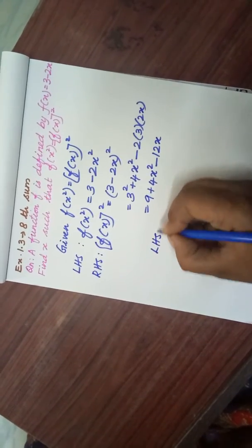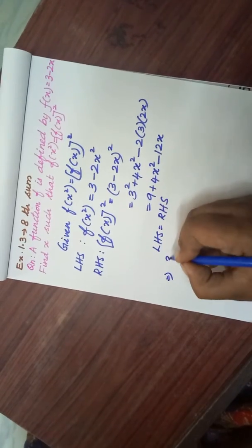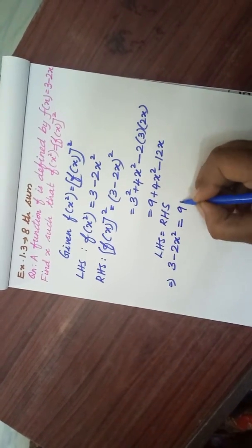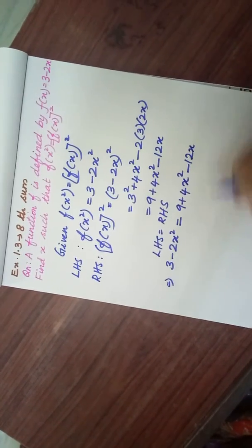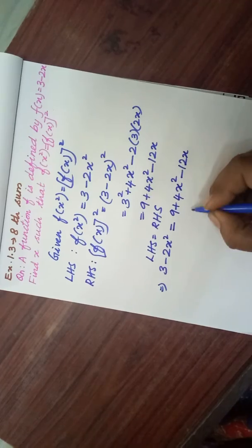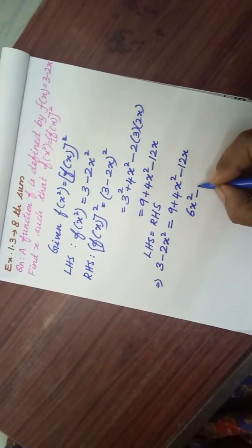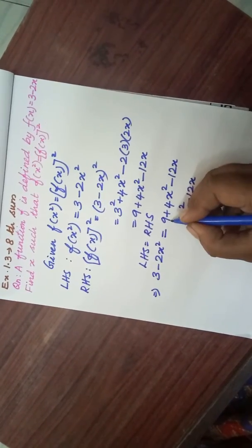LHS = RHS, which is 3 - 2x² = 9 + 4x² - 12x. Taking -2x² to that side: 6x² - 12x. Taking 3 to that side: 9 - 3 + 6 = 0.